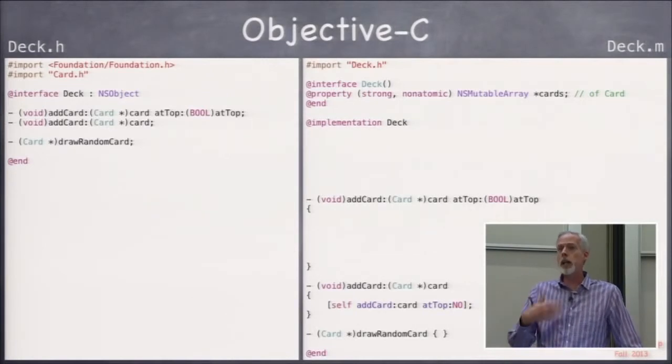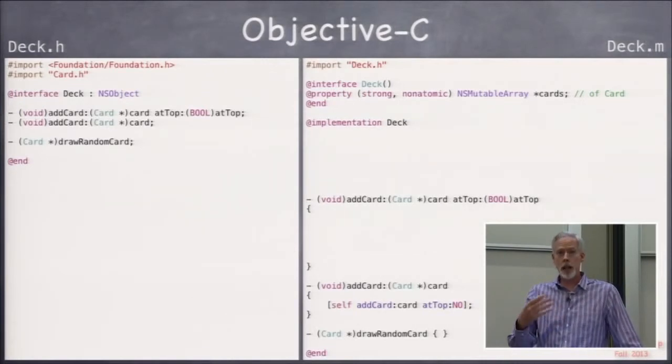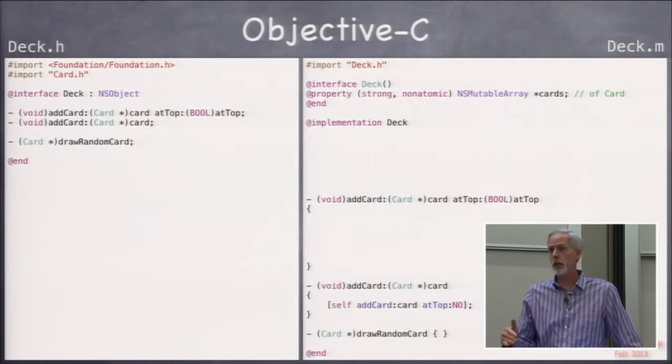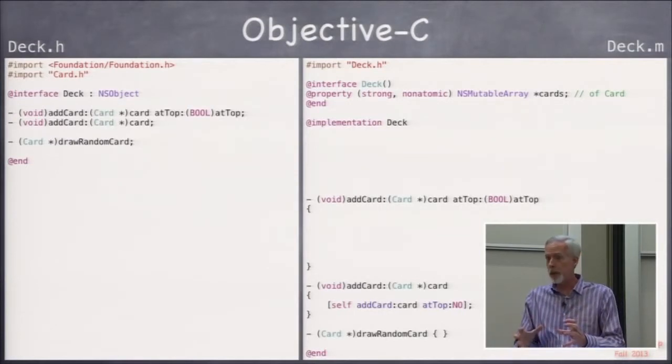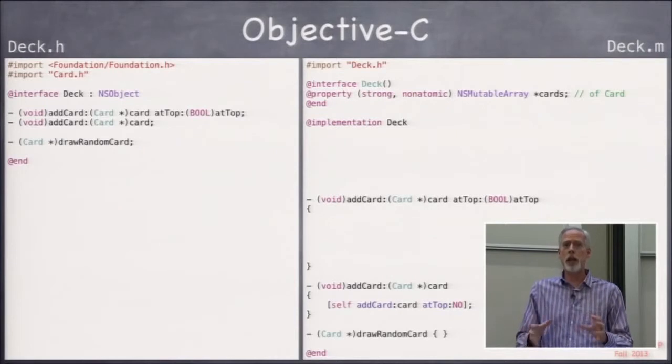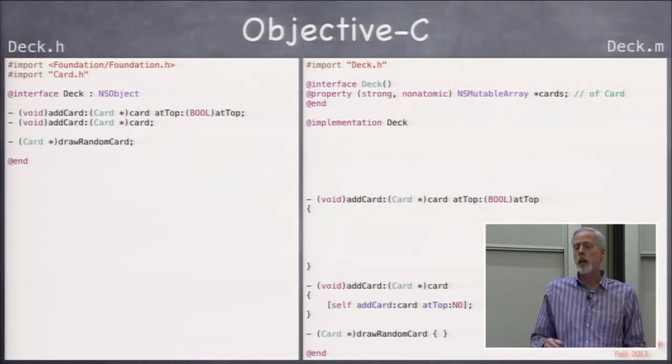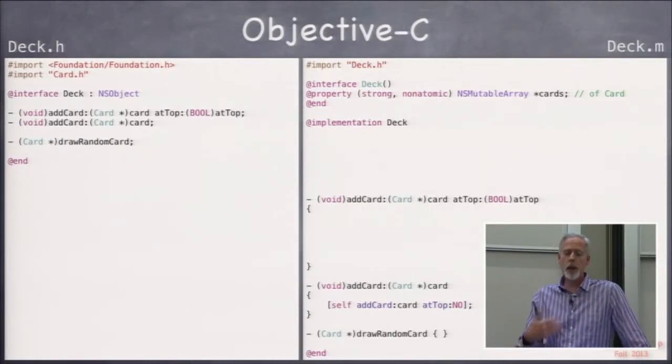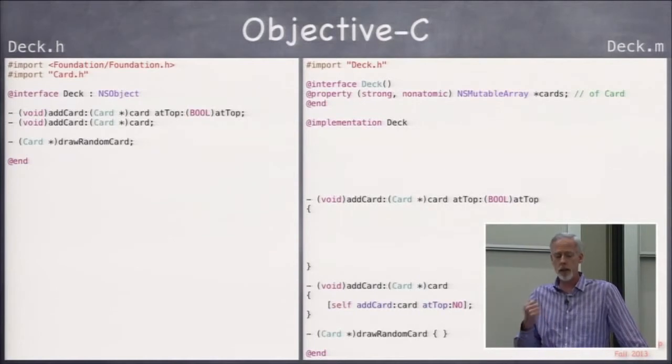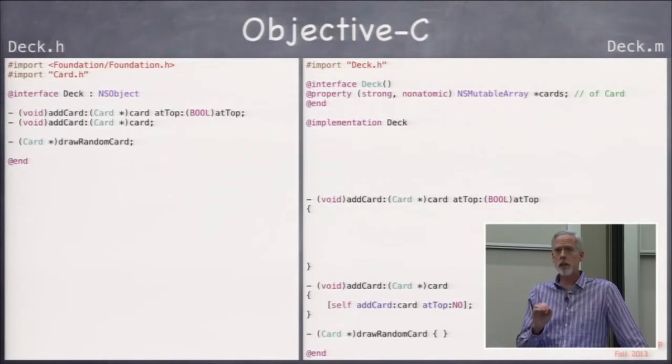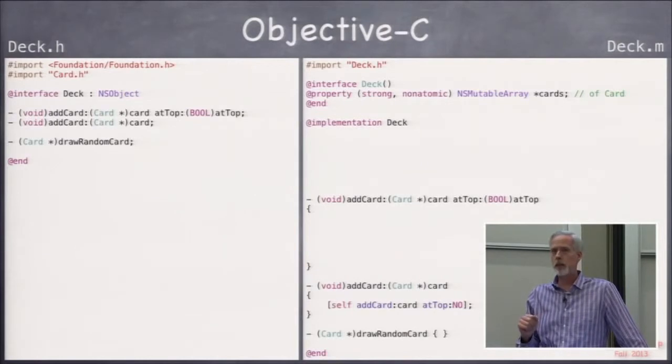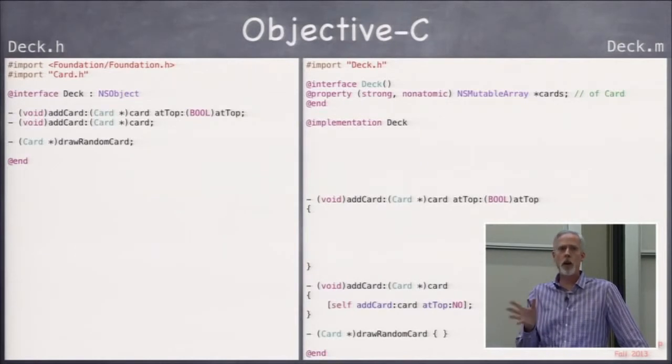A mutable means that we can add objects to the array. Normally, an NSArray is immutable. Once it's created, whatever objects are in it, that's the objects that are in it forever. You can't take any out, and you can't put any in. If we want an array where we can add stuff, we have to use NSMutableArray. It's strong, because we want this array to stay in the heap as long as we're pointing at it, and we always put non-atomic there.